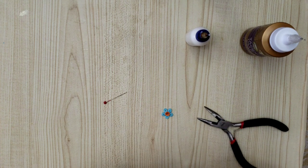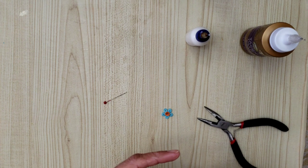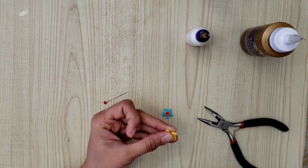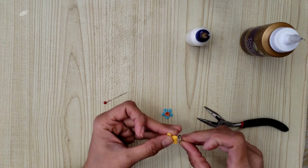Here I have made simple teardrop flowers with 1mm quilling strips. Pass a jump ring from one of the flower petals.